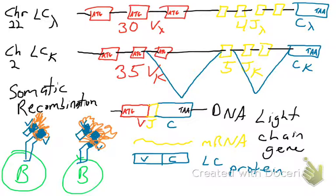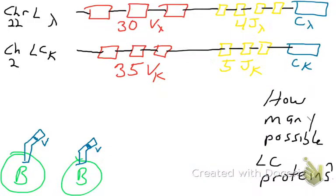This process is called VDJ or somatic recombination. Although there are no D segments in the light chain, the term VDJ recombination refers broadly to the cutting and pasting of gene segments in both heavy-chain and light-chain genes. We will do an activity in class to help you mimic this process. So how many different possible light-chain proteins can a B cell make?